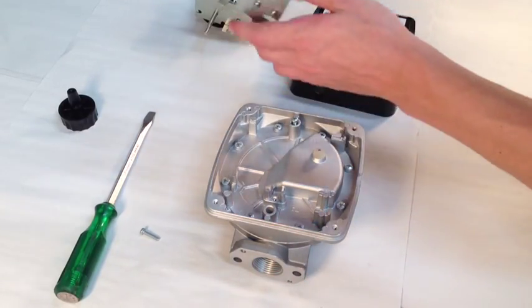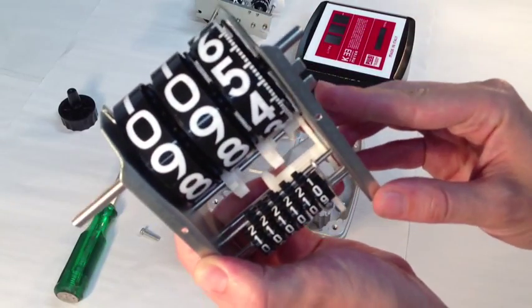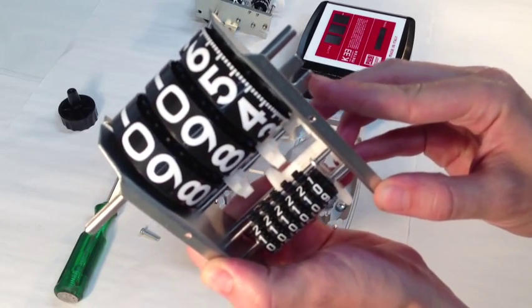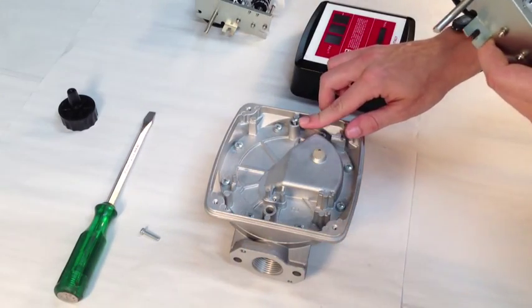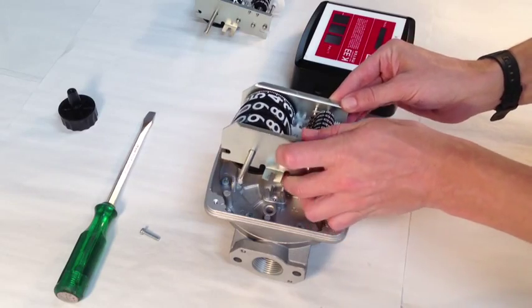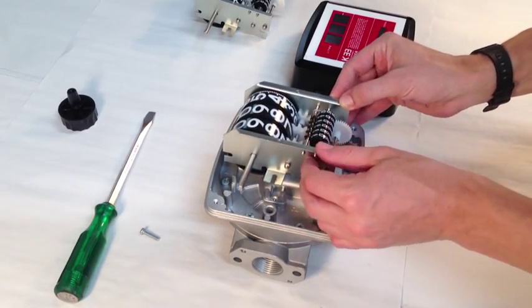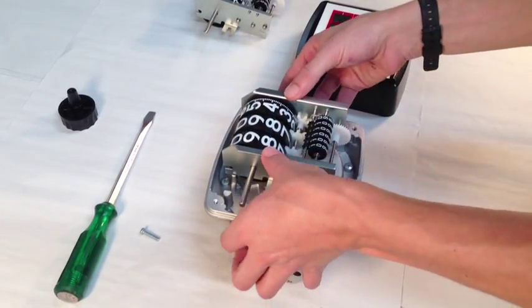Take the replacement counter assembly and line the notch on the right hand side up with the retaining screw that is left in place. Slide the bracket underneath the screw and make sure that the replacement counter assembly sits square with the body of the meter.